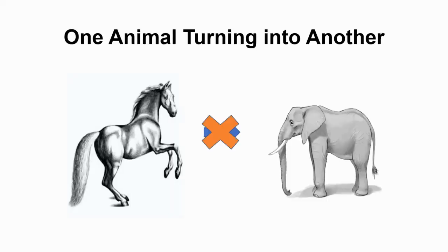So one of the first things to know is that evolution is not about one animal turning into another animal. In this case, a horse does not turn into an elephant. In fact, nowhere in any part of evolutionary theory is there any discussion of animals turning from one thing to another or giving birth to something other than what that animal actually is.